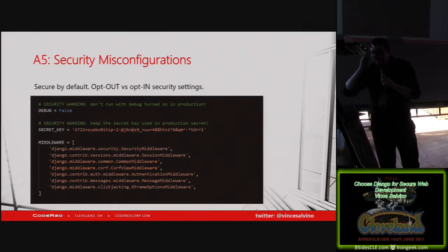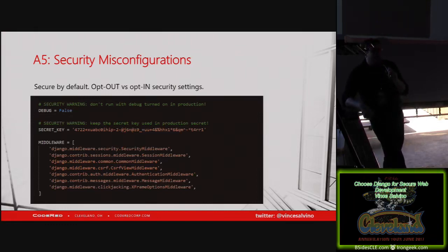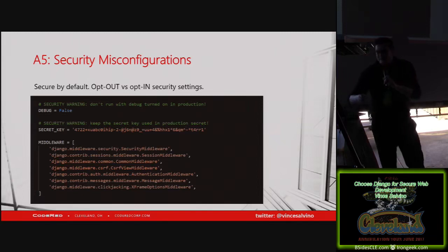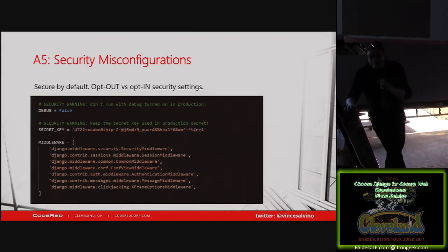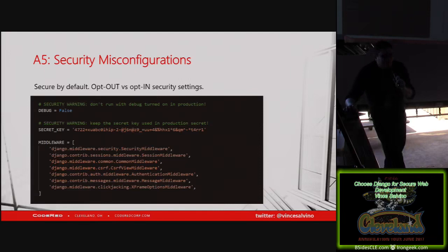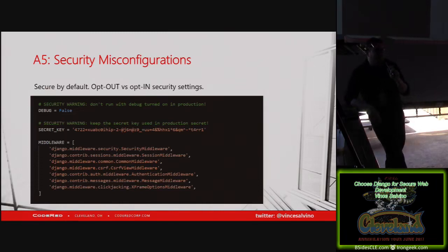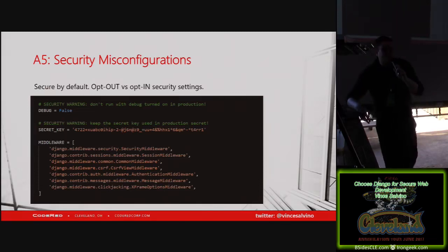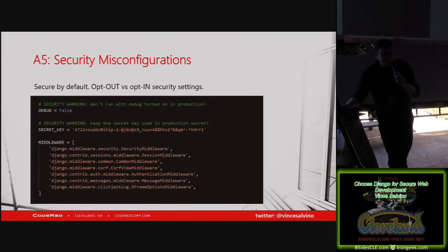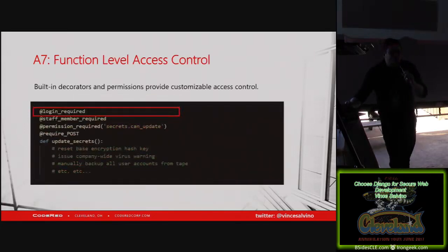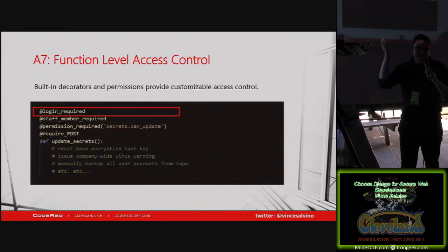Bonus round: security misconfigurations. This is one you can't entirely handle in code — you have to tweak settings. But this code here is directly out of a default Django project. When you just install Django and create a new project, it spits all this out with security warning comments in the code, telling you do not turn this on in production. All these middlewares — Django security middleware, cross-site request forgery middleware, authentication middleware — are all turned on by default. Debug is normally on because you need it during development, but there's a big bold warning above it to turn it off. It generates a secret key and has a lot of security settings on by default.